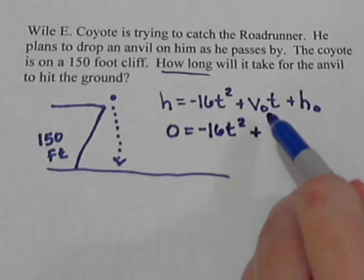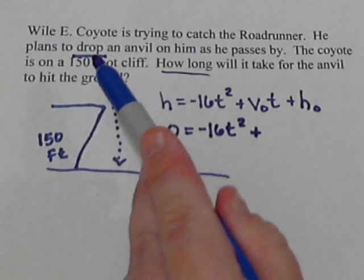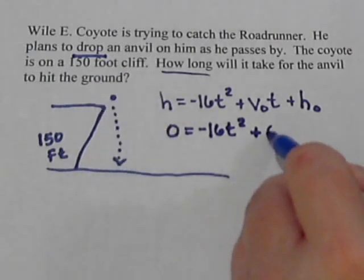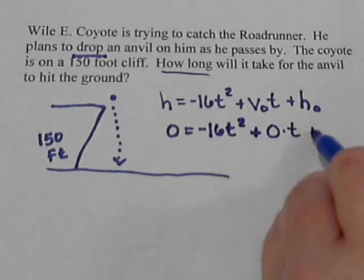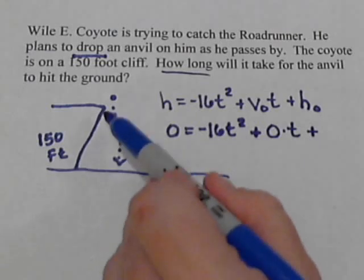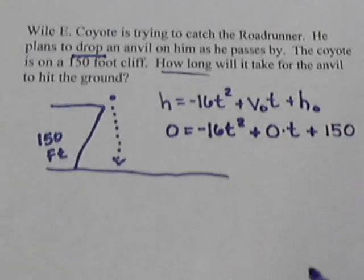All right, the initial velocity. Well, it says in the problem he's just going to drop the anvil. And so if you just drop the anvil or anything, that means there is no initial velocity. So our initial velocity is 0 times the T. And then what's our initial height? Well, we're on a 150-foot cliff. So that becomes 150.